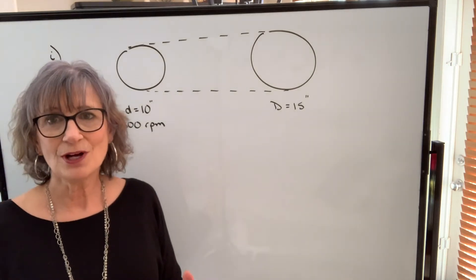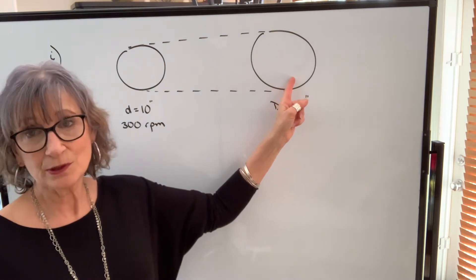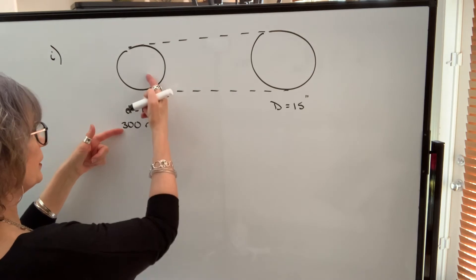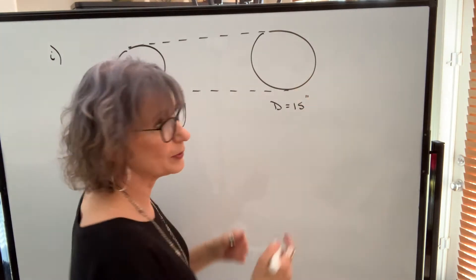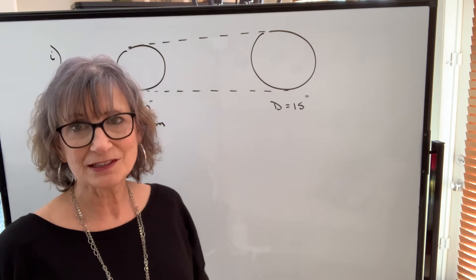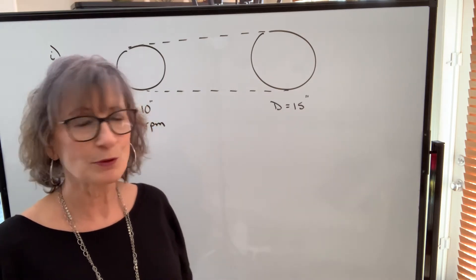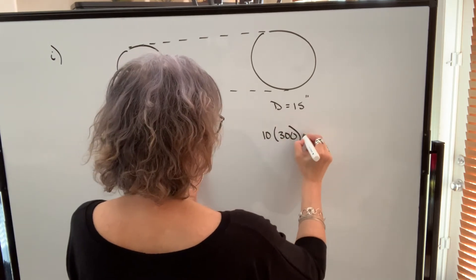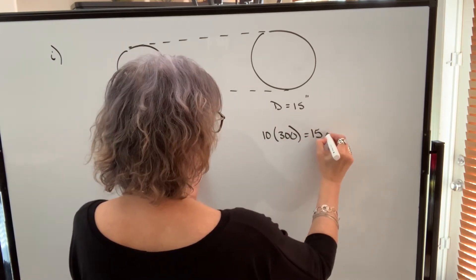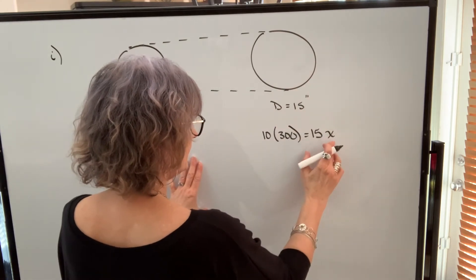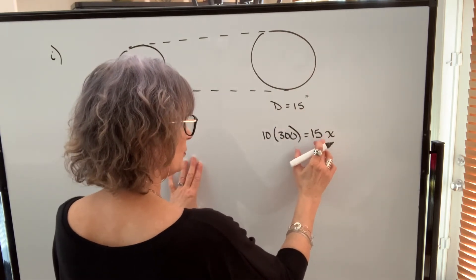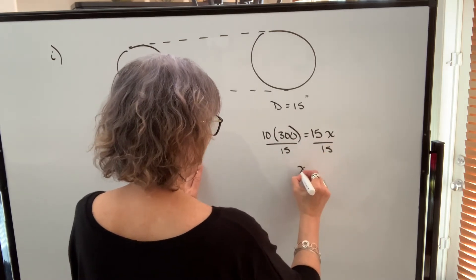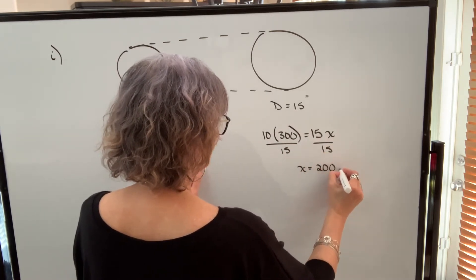Now we learned in a previous video how to find the RPM of this pulley, which we can do. We know that size times speed of this pulley will equal size times speed of this pulley. The sizes and speeds of pulleys belted together are inversely proportional. So we could say 10 times 300 will equal 15 times this speed, which I'll call X. And in order to solve for X, I divide both sides by 15. So I get a speed of 200 revolutions per minute.